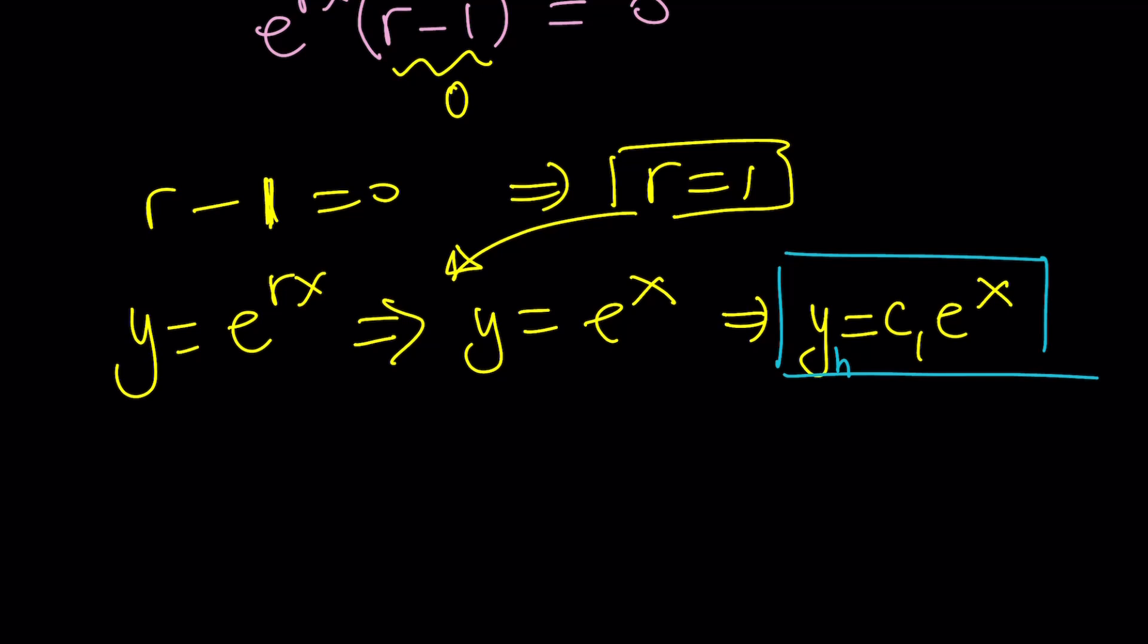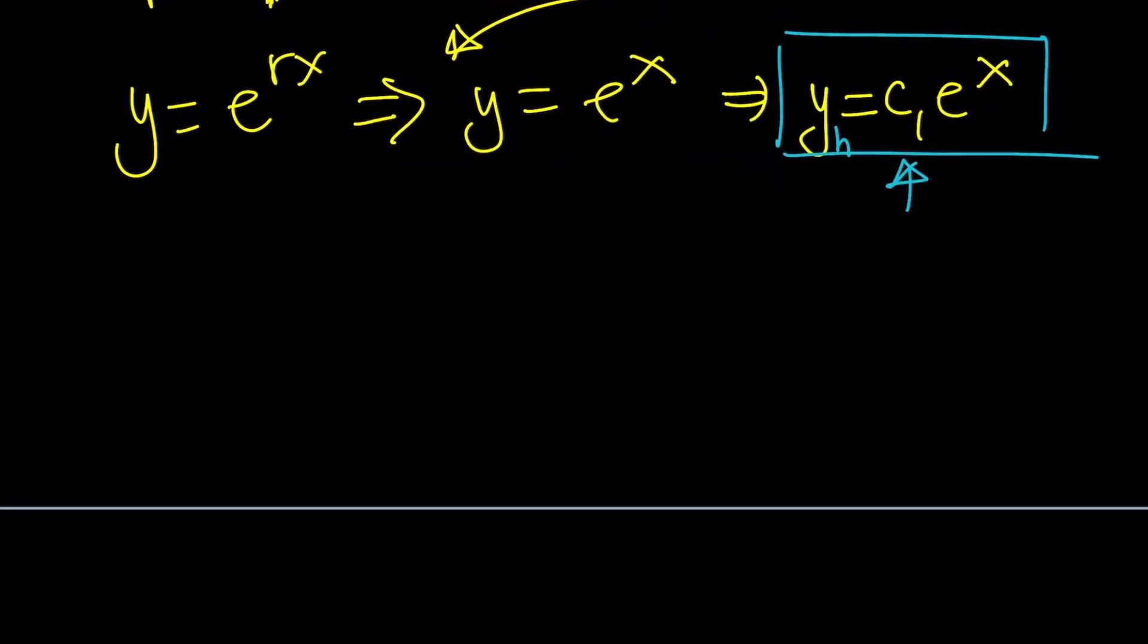Now, here's what we're going to do. Looking at the homogeneous case, we're going to assume an equation in this form, except we're going to replace the constant with a function of x. That's how the variation of parameters works because c sub 1 is a parameter. We're going to change it. We're going to do a variation on it. In other words, we're going to assume a particular solution in the form of u times e to the x.